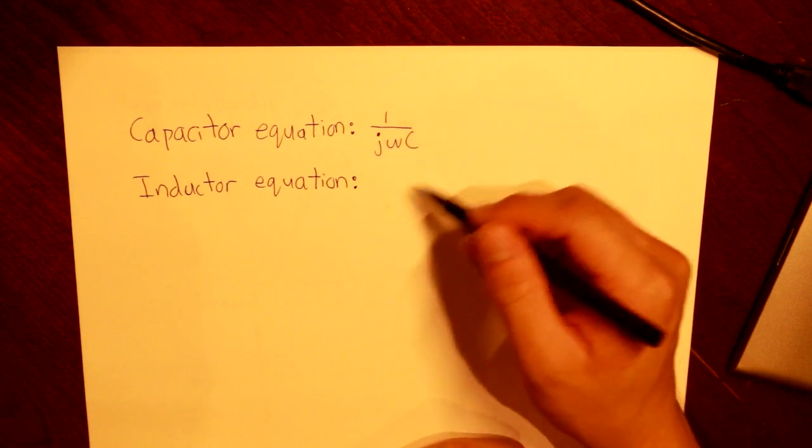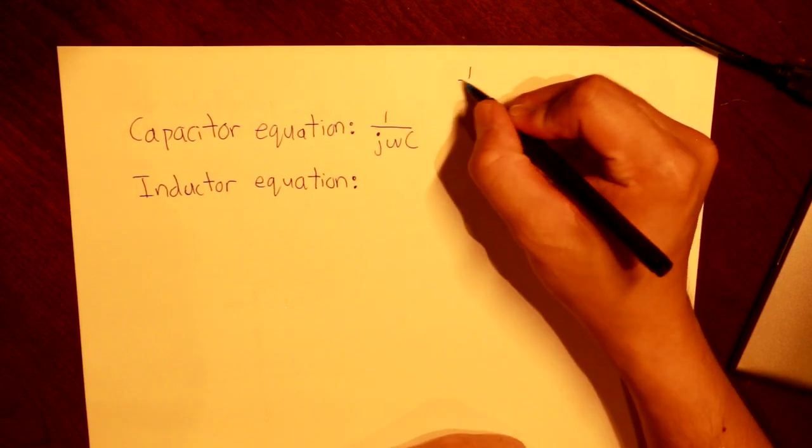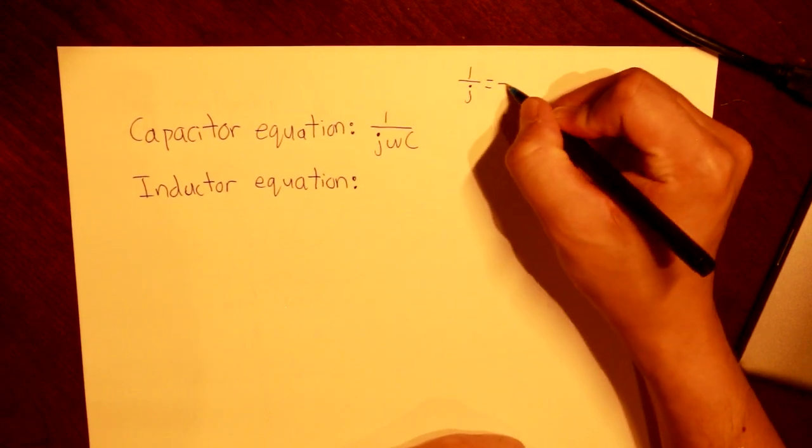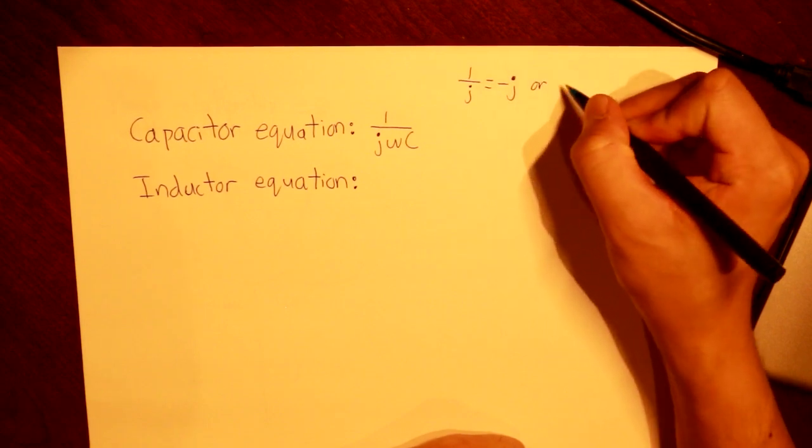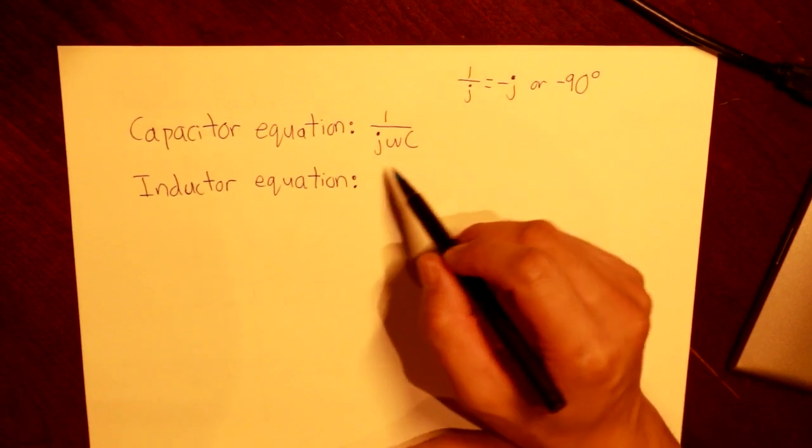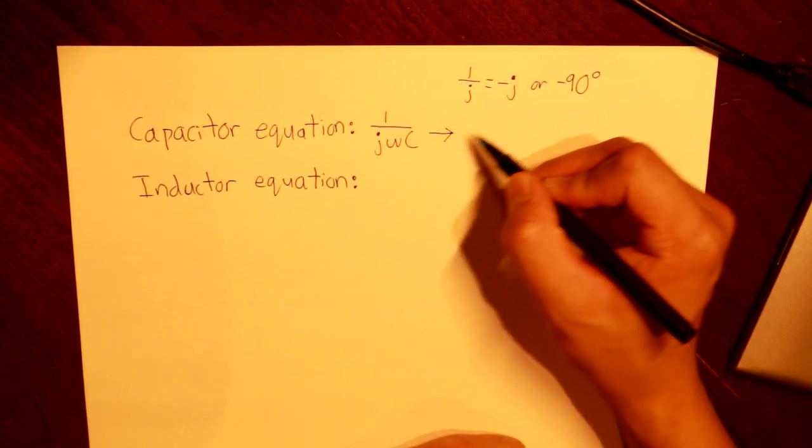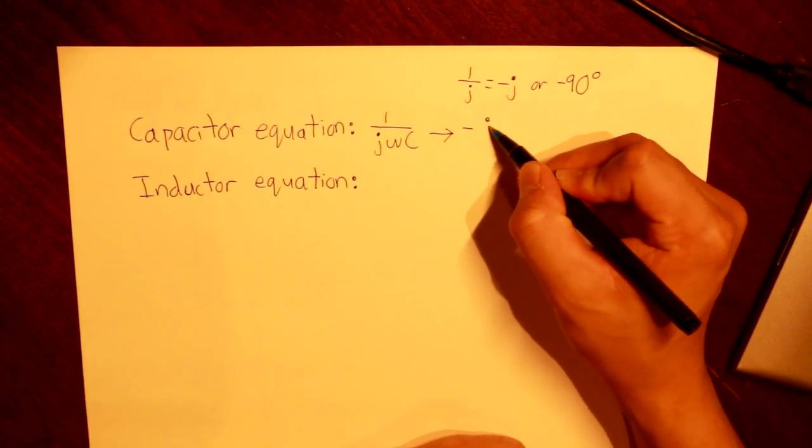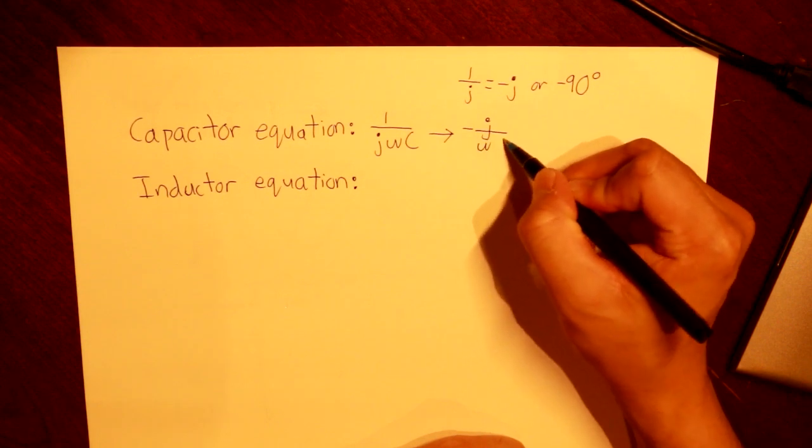Now we know by the complex identity of 1 over J, that is equal to minus J, or minus 90 degrees. And that is why 1 over JWC could be translated to minus J over WC.